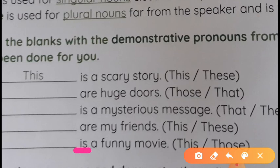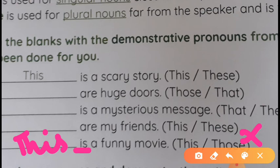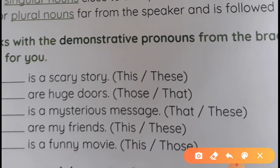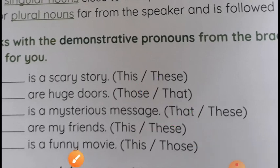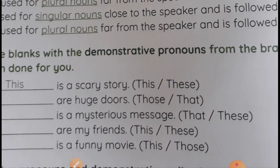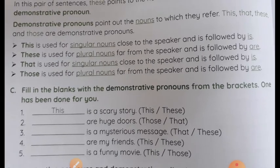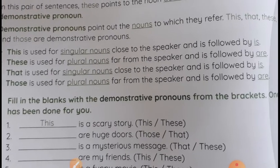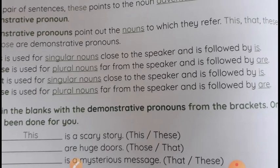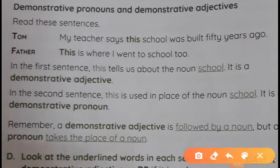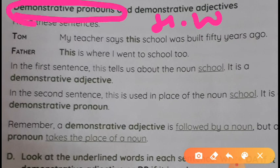Number five: blank 'is a funny movie.' 'Those' followed by 'are' is wrong here since 'is' is needed. The correct answer is 'this.' So to summarize the answers: number one — this (given); number two — those; number three — that; number four — these; number five — this. This completes the demonstrative pronoun exercise.